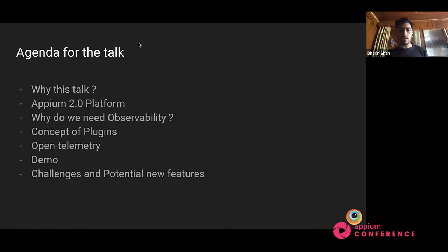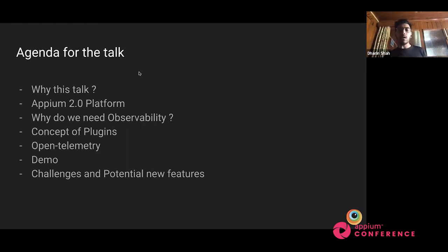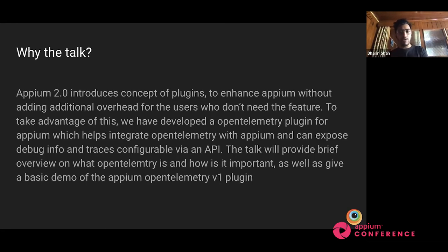APM has the 2.0 platform right now, which is a new platform built for developers. We can modify and build new features around it — that's what APM offers. This is one of the libraries or plugins we can integrate with APM to get an observability feature. APM 2.0 introduced the concept of plugins, which lets us extend APM's existing features, plus add new features that not everyone needs but some companies and individuals would want.